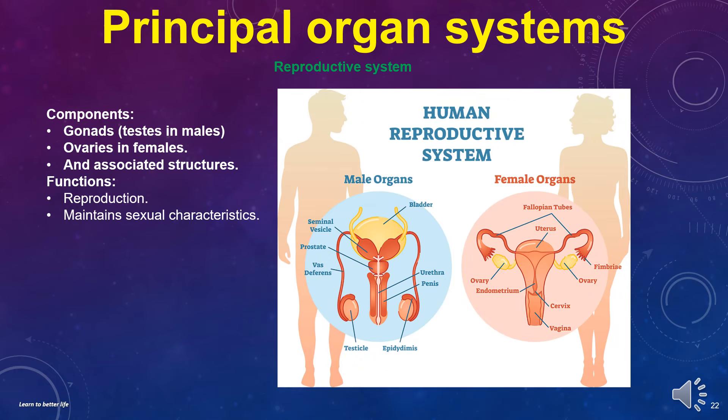The reproductive system components are the gonads — testes in males and ovaries in females — and associated structures. Its functions are reproduction and maintaining sexual characteristics.